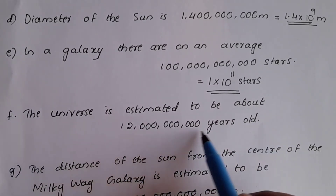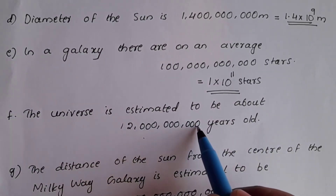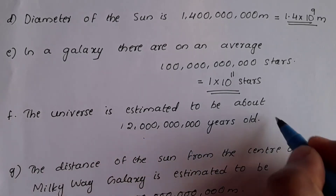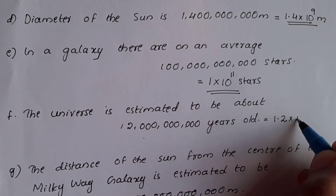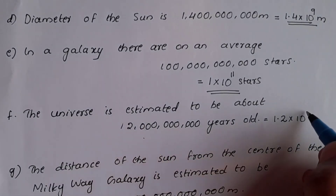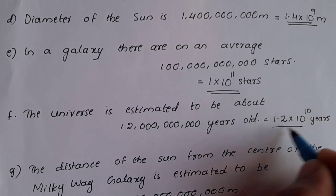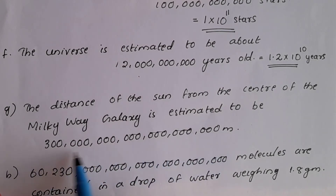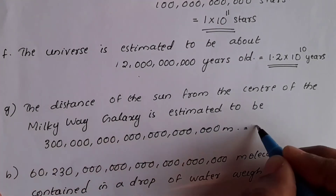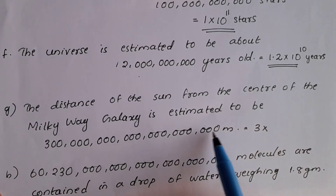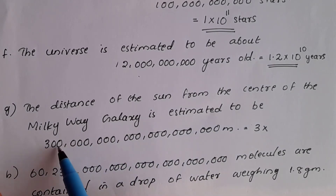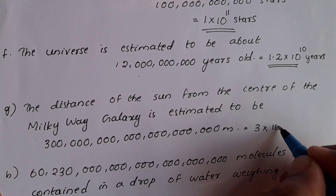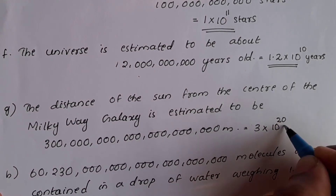Next question — this number in standard form. How many digits? Counting: 3, 6, 9, 10, 11 — gives 1.2 into 10 raise to 10. For the following number, counting digits: 3, 6, 9, 12, 15, 18, 19, 20, 21 — so 10 raise to 21 minus 1 is 20 meters.